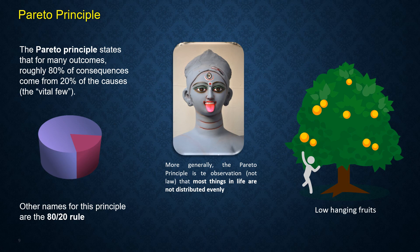Pareto also implies that most things in life are not equally distributed. The same thing applies for your data sets too in machine learning.